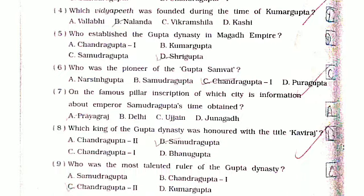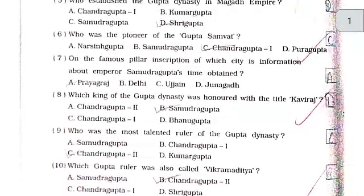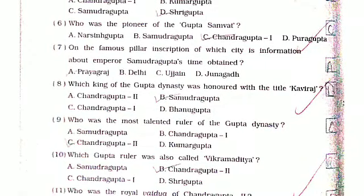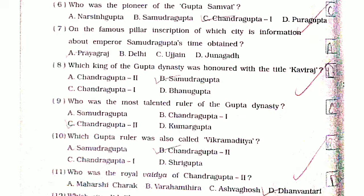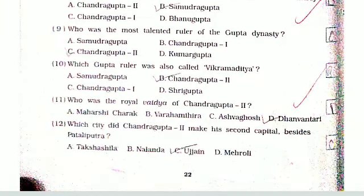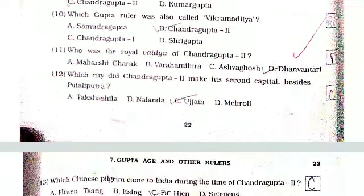Who established the Gupta dynasty in the Magadh Empire? Shri Gupta. Who was the pioneer of the Gupta Samrajya? Chandragupta 1. From which city's famous pillar inscriptions is information about Emperor Samudra Gupta's time obtained? Allahabad. Which king of the Gupta dynasty was honoured on earth with the title Kavi Raj? Samudra Gupta.